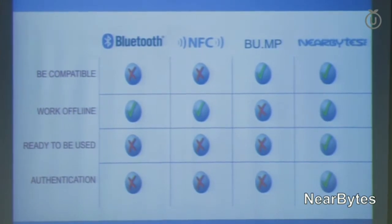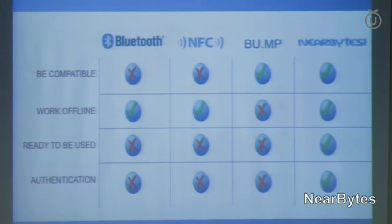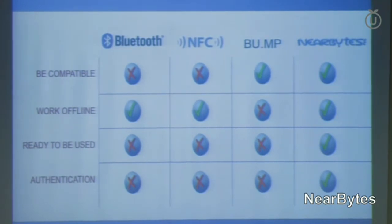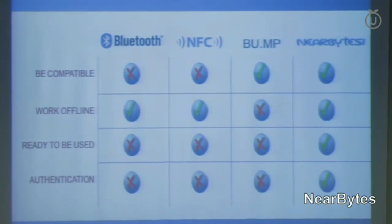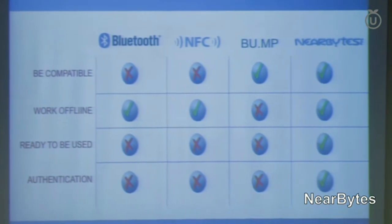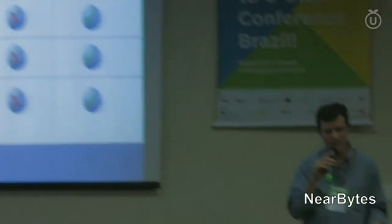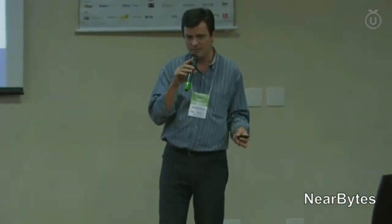The third one is also very important: it should be ready to be used. Most mobile proximity applications require NFC or Bluetooth, and in most cases you need to enable this hardware on your device. People usually keep these hardware features disabled, so it ruins the experience. And on top of that, you should have a security layer that allows you to make safe transactions, mobile payments, and online authentications.